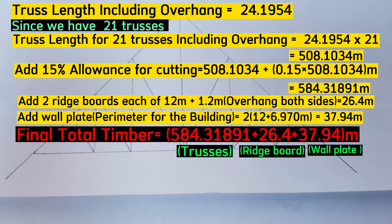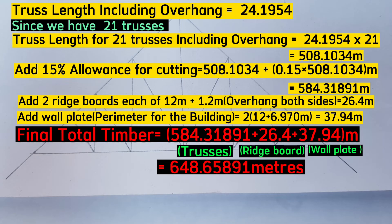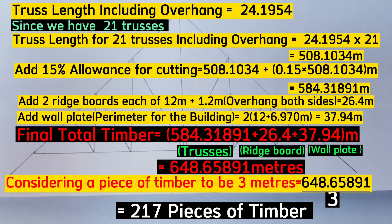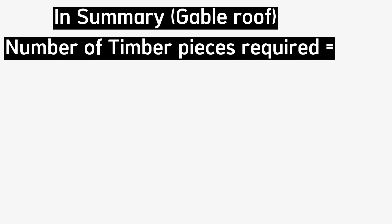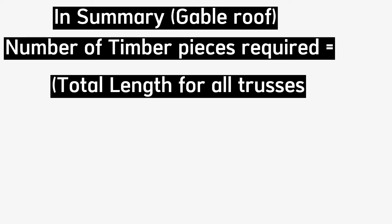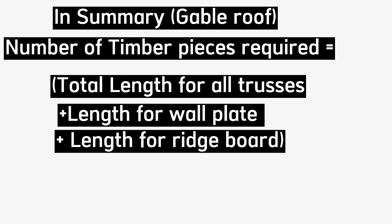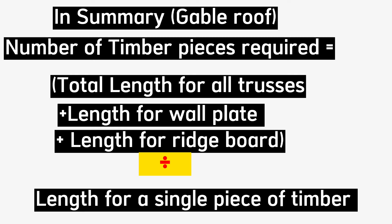When we add the total length for all trusses (584.32 meters), the wall plate perimeter (37.4 meters), and the ridge board (26.4 meters), we get 648.66 meters. Dividing by 3 meters per piece of timber gives 217 pieces of timber. In summary: get the total length for all trusses, add the wall plate length, add the ridge board length, then divide by the length of a single piece of timber.